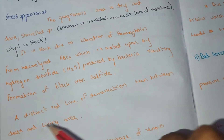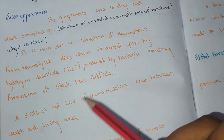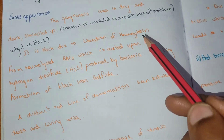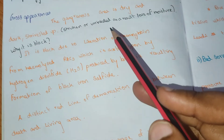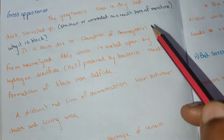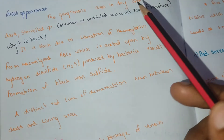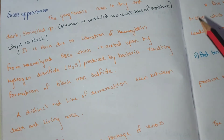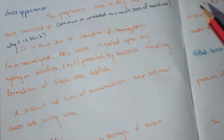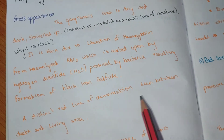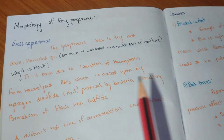A distinct red line of demarcation is seen between the dead and living areas, distinguishing the gangrenous or necrotic part from the living tissue. This line of demarcation is characteristic of dry gangrene.